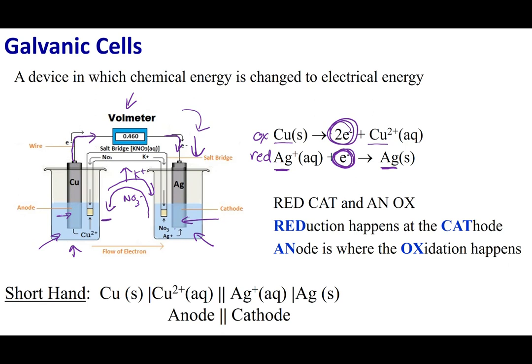Just to get some terminology out of the way. The side where I am doing my oxidation, we call that the anode. The side where I do my reduction, we call that the cathode. A mnemonic device, red cat and an ox. Reduction happens at the cathode. Oxidation happens at the anode.